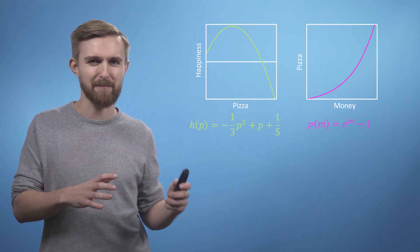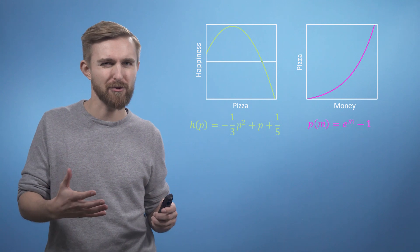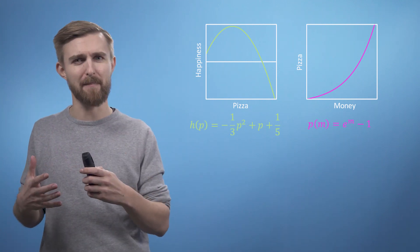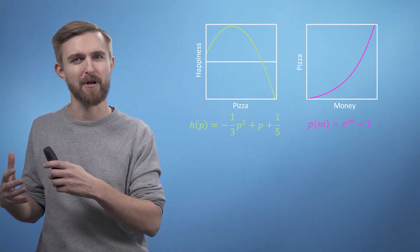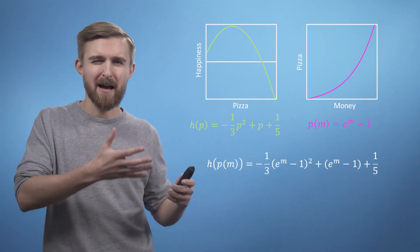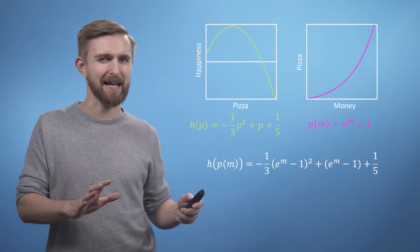For now, this relatively simple example, we could just directly substitute our pizza money function into our happiness pizza function, which would give us this, and then differentiate this thing directly.